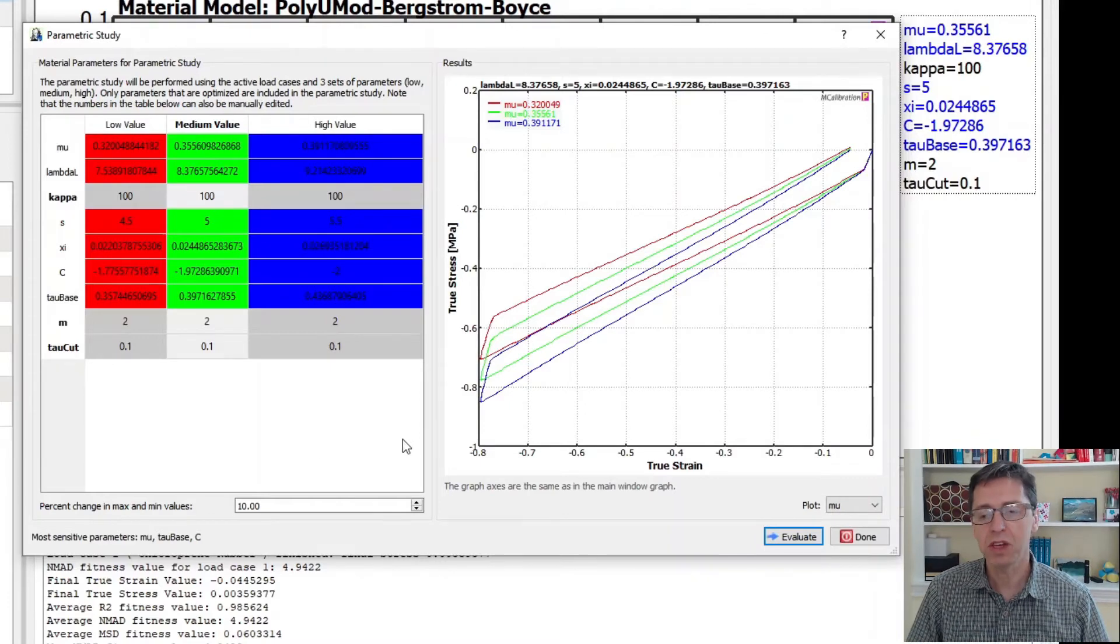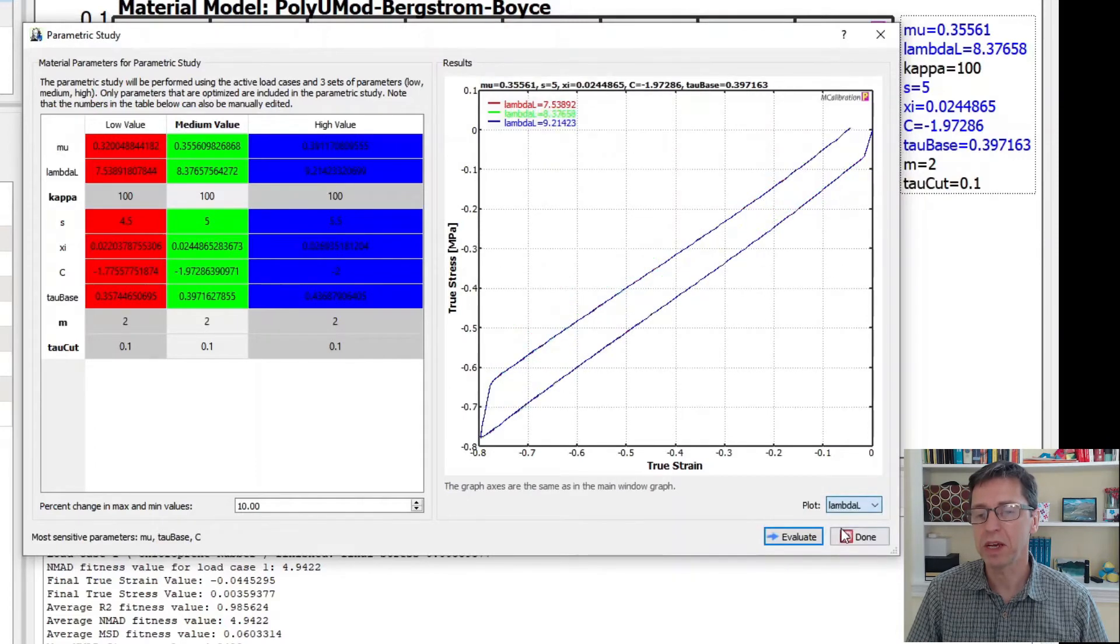So this is how you can explore different material parameters, how they influence the response. You can look at other ones here. Lambda L doesn't seem to do anything in this case and that's not surprising because Lambda L has to do with the large strain response and we don't really go to very large strains and also the Lambda L values are very large.